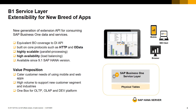For SAP Business One for SAP HANA extensibility, the main integration point is the service layer. The service layer has the same business object coverage as the SAP Business One SDK data interface, or DIAPI, but is built on core protocols such as HTTP and OData.